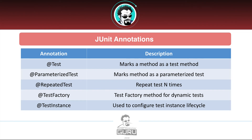Now let's look at the major annotations inside JUnit. The @Test annotation marks a method as a test method, just like JUnit 4. @ParameterizedTest allows your tests to take in parameters. @RepeatedTest tells JUnit to repeat the test a number of times. @TestFactory provides a factory method for dynamic tests. @TestInstance is used to configure the test instance lifecycle. We'll be looking at the functionality of these shortly.